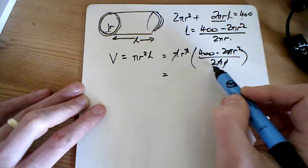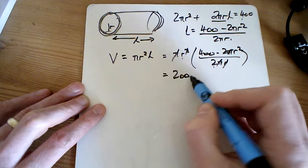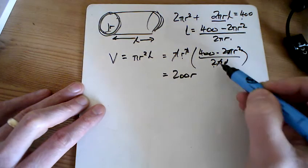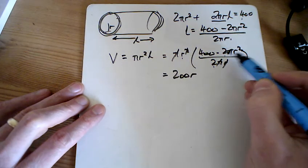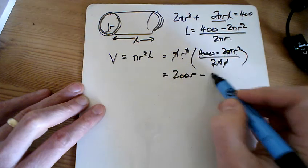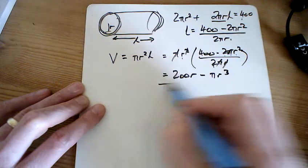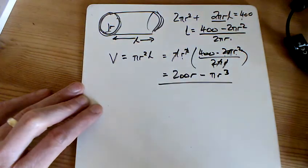So we've got 400 divided by 2, which is 200, times by the R, which is 200R. We've got 2πR², cancel the 2's, to leave me with πR³. And that was what you were asked to show.